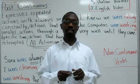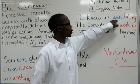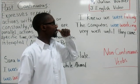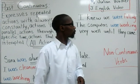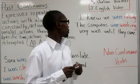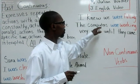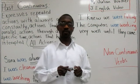Let's look at the next sentence on the board: I knew we were falling. We use were because we is plural. This shows actions through a specific time. Next: The computers were working very well until they came. Were goes with computers, the B form of the verb in the past, and work is the base form plus ing. This shows an action that had been interrupted.